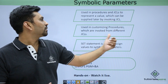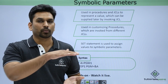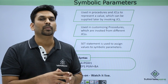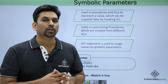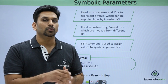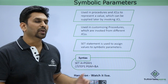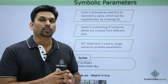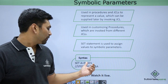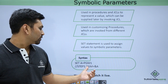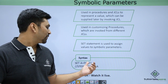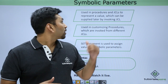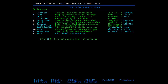Symbolic parameters are used in procedures and JCLs to represent a value which can be supplied later by an invoking JCL. Suppose you have a block of code where only the program name needs to change each time while all other parameters and statements remain the same. You can generalize it using a symbolic parameter like ampersand A. From the invoking JCL, if you need to execute program one, set A equal to PGM1, and ampersand A will be replaced by PGM1, allowing the same code to be reused across multiple JCLs.